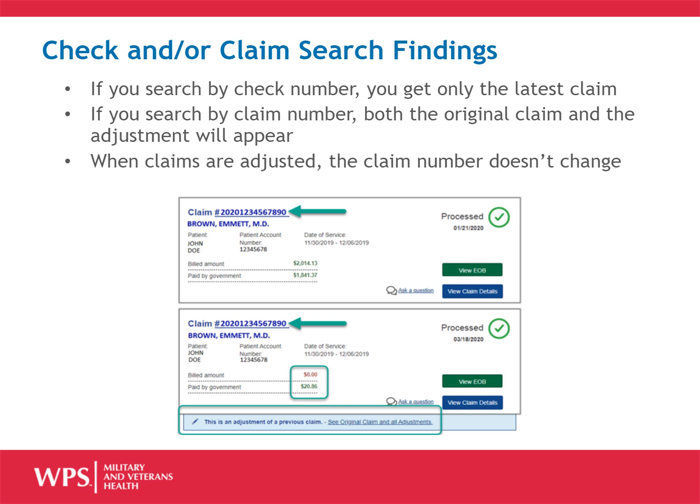Please note: when claims are adjusted, the claim number doesn't change. Here you can see the claim numbers match, as well as the dates of service. You can identify that there was an adjustment because there is an additional payment and a tab at the bottom indicating an adjustment.